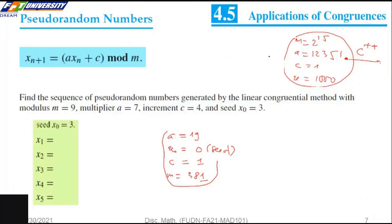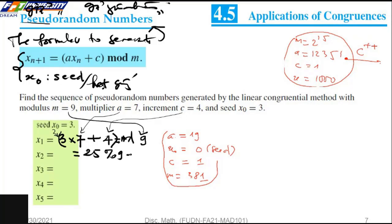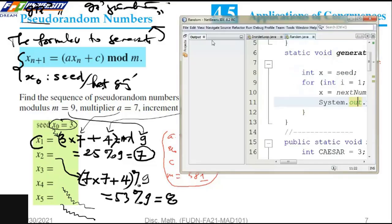The second application of congruence is in computer simulation, where we often use random numbers. One method to generate pseudo-random numbers uses congruence. We use the formula: x_{n+1} = (a·x_n + c) mod m. For example, with seed x_0 = 3, multiplier a = 8, increment c = 6, and modulus m = 9, the result is 7. So the next number after 3 is 7, and then 8, and so on.